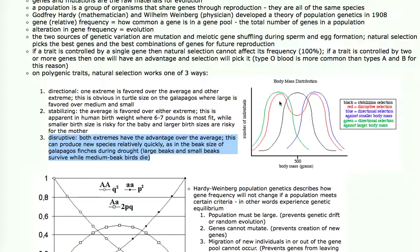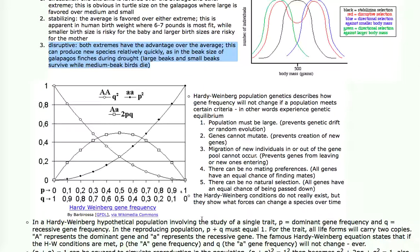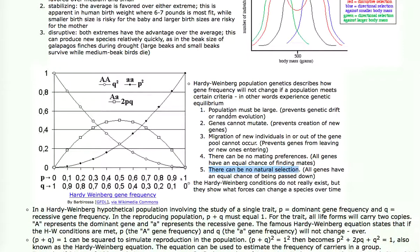The Hardy-Weinberg theory is basically this: a gene frequency will not change if a population meets the following criteria. The population must be large, which prevents genetic drift. Genes cannot be allowed to mutate, so you can't make new genes. Migration cannot occur. Individuals stay where they are and breed with the local populations. There are no mating preferences, so males and females do not choose mates. Everybody's got an equal chance of finding a mate. And there's no natural selection, so everybody gets to survive. If you wipe out all five of these conditions, there can't be any evolution. Godfrey Hardy and Wilhelm Weinberg said the strongest force in the five is number five. Natural selection is the strongest force of evolution.